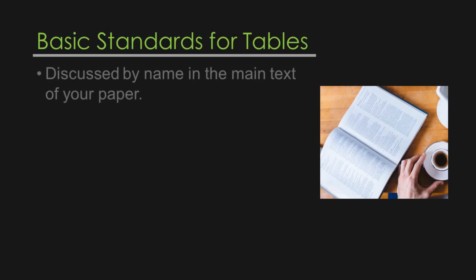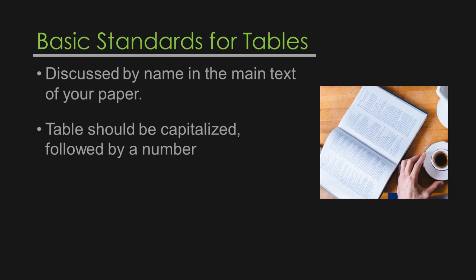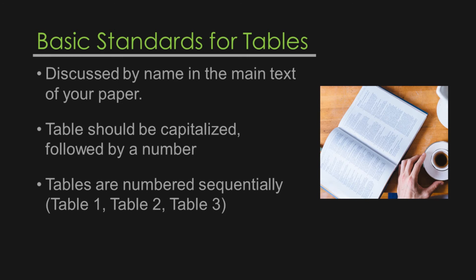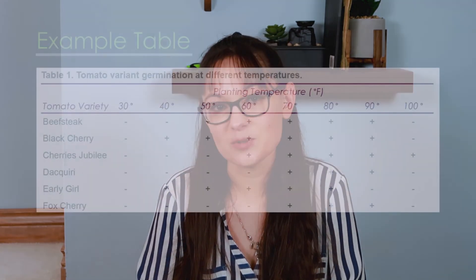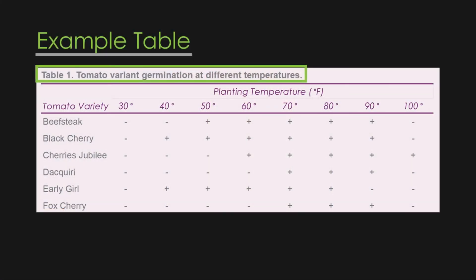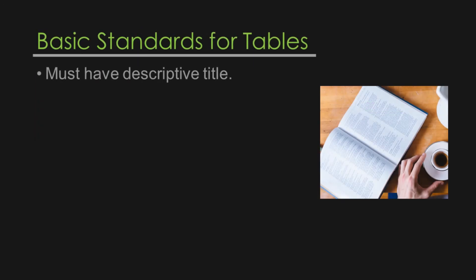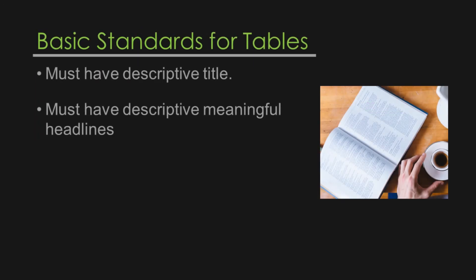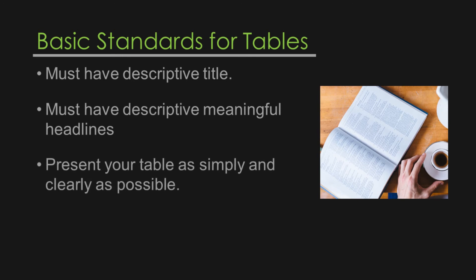When preparing and labeling your tables, here are some general guidelines — and again, consult your journal for their requirements. Tables must be directly discussed within the body of your paper. The 'T' in table must be capitalized, and it's followed by a number. Tables are numbered sequentially: table one, table two, table three, and so on. Table titles are presented above the table. Tables should have a descriptive title, and table columns must have descriptive, meaningful headlines. Present your table as simply and clearly as possible.